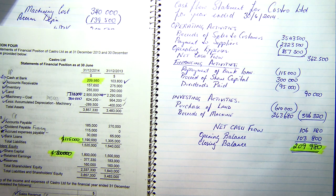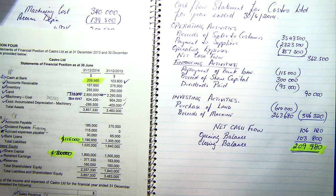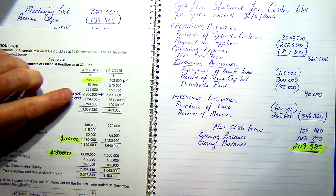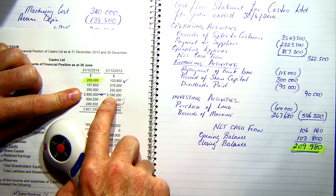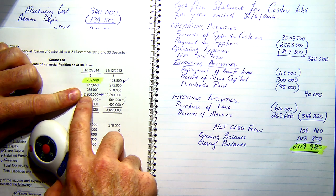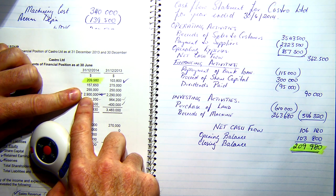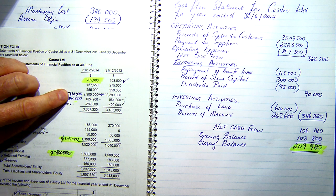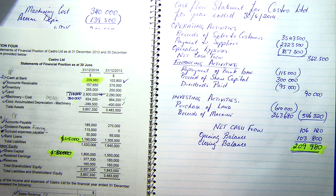Is that purchase of land $710,000? No, my purchase of land is $610,000 — the difference between $290,000 and $900,000 is $610,000. You had $710,000 earlier. Yes, I know — I made a mistake. Sorry.